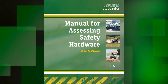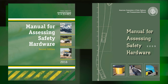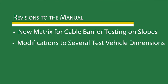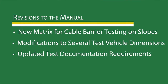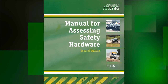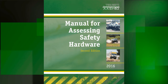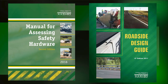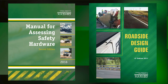This new manual, which supersedes the 2009 First Edition, includes several significant revisions, including a new matrix for cable barrier testing on slopes, modifications to several test vehicle dimensions, and updated test documentation requirements. The manual's guidelines are designed to be consistent with, but not supersede, those found in the ASTRO Roadside Design Guide, Fourth Edition.